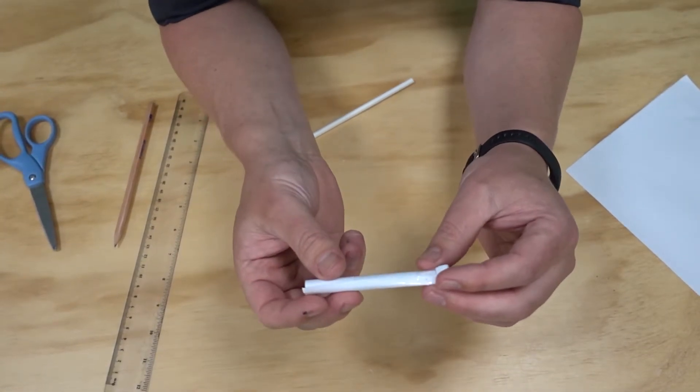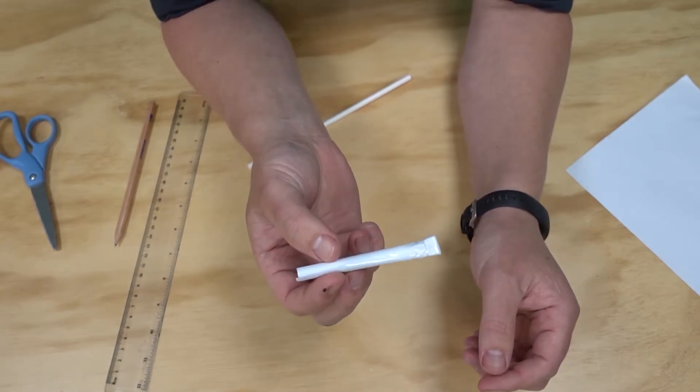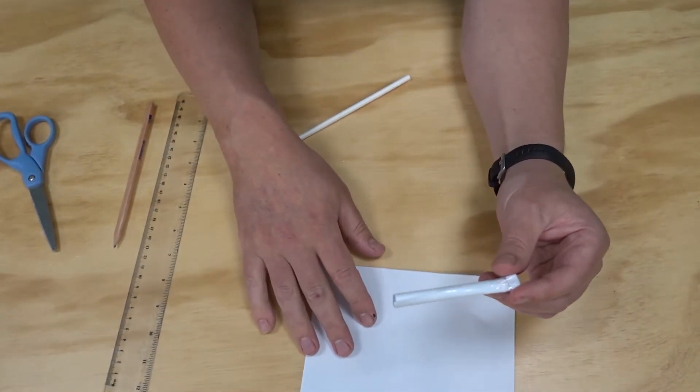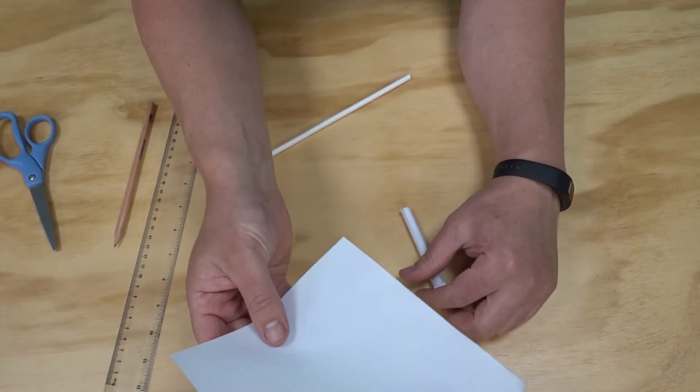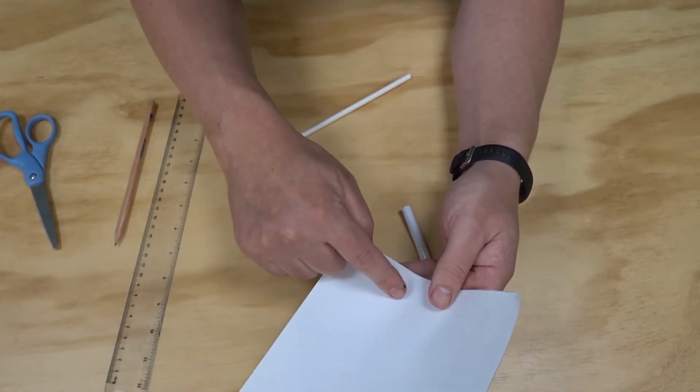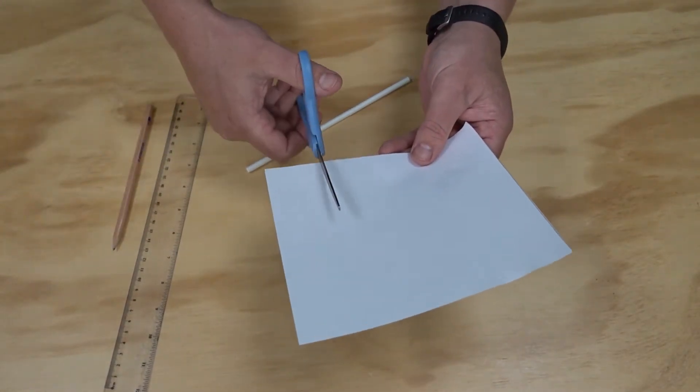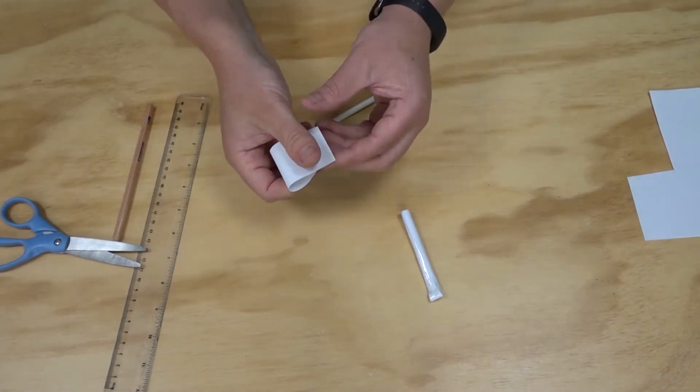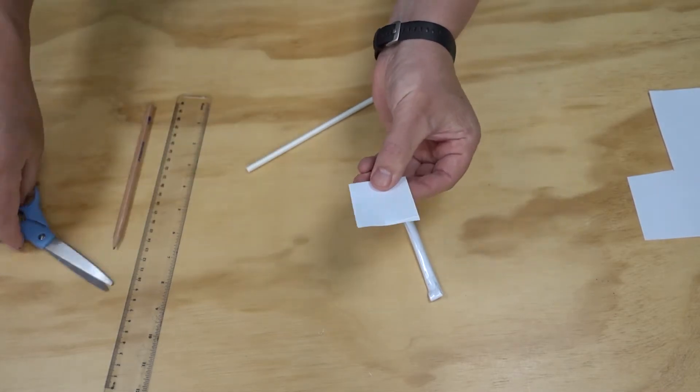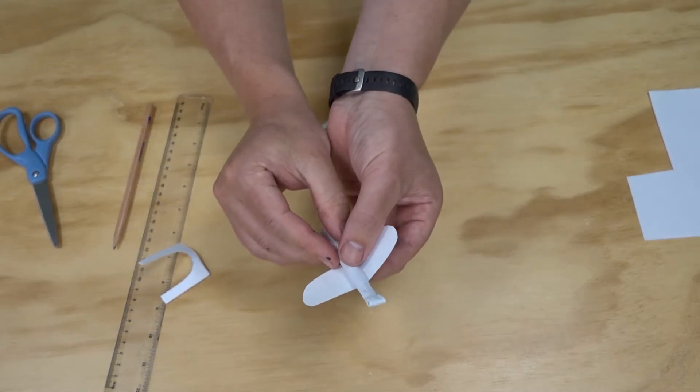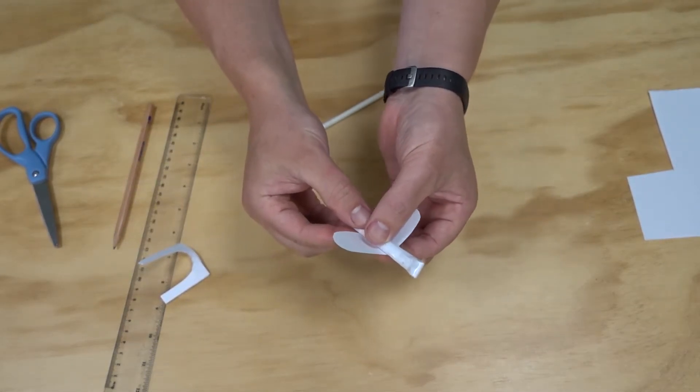Now a rocket will work just like this, but I'm going to try and make it a little bit fancier by giving it some wings using my leftover piece of paper. To make my wings symmetrical, I'm going to cut a piece of paper, fold it in half, and then cut my shape from that. Then I'm going to secure that to the bottom of my rocket with another piece of tape.